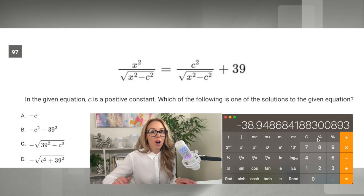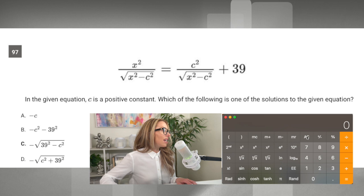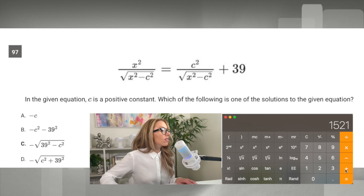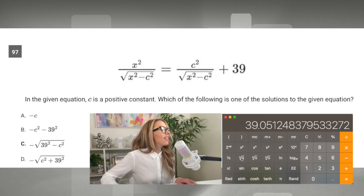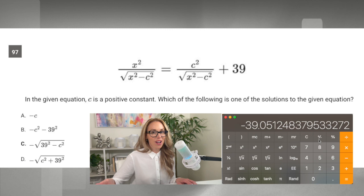So I'm going to try D. With D, I'm taking 39 squared plus 4, plus the C-squared, then square rooting that and making it negative. And there we go - that's what we needed, 39.051. That's a direct match. We know the answer is D and we're good to go.